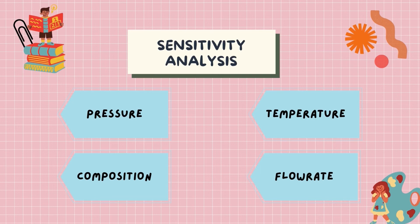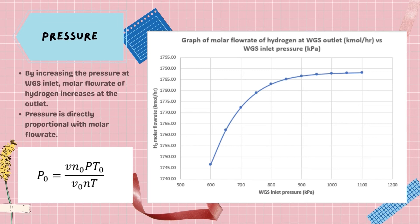In the second part, a sensitivity analysis is conducted to study the effect of four operation variables on the reactor performance. The operation variables focused in the study are pressure, temperature, composition and flow rate. Firstly, by increasing inlet pressure of WGS reactor, the molar flow rate of hydrogen was observed to be increased. From the graph, the hydrogen increases sharply and then levels off as the temperature increased from 600 to 1100 degrees Celsius. This can be explained from the equation, where pressure is directly proportional with molar flow rate. By choosing the right pressure, the yield of hydrogen could be maximized.